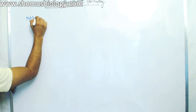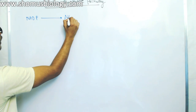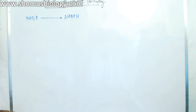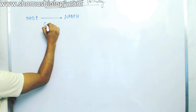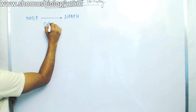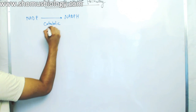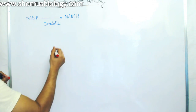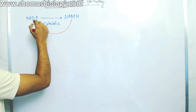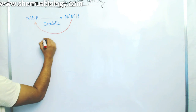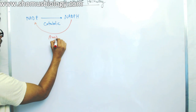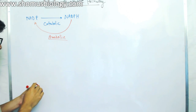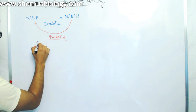We see the conversion of NADP to NADPH mostly in catabolic pathways. But if you go to anabolic pathways, most of this NADPH is required for those anabolic pathways and we call them reductive biosynthesis.